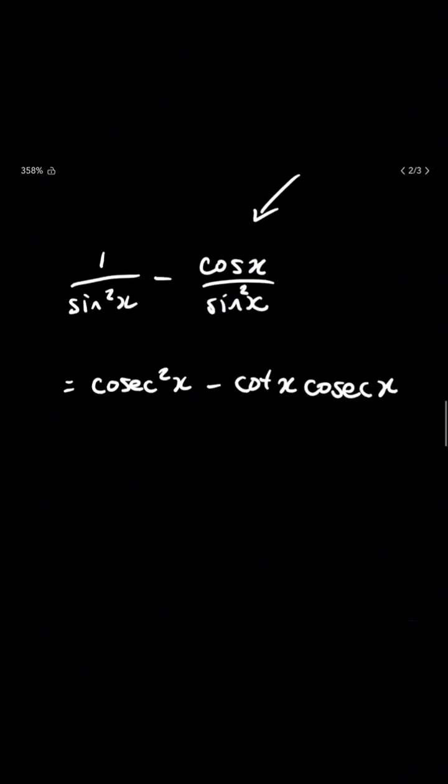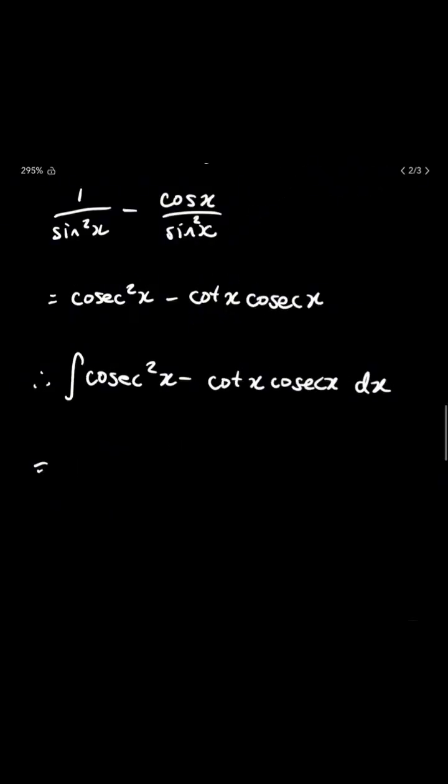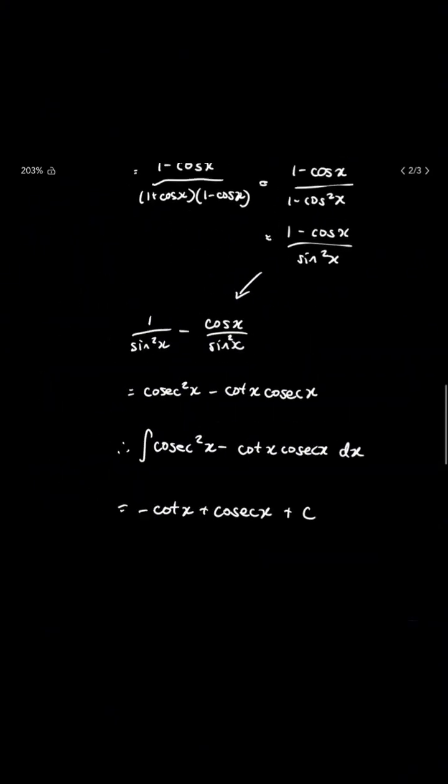So now this is easily integrable. Now, using your formula booklet, we can integrate this into minus cot x plus cosec x plus c. Don't forget the constant. And yeah, that's how you solve an A-level integral.